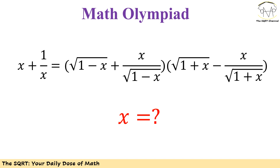On the left hand side we have x plus 1 over x, and on the right hand side we have two terms that are multiplying by each other. Each term includes two subterms. We have radical(1 minus x) and x over radical(1 minus x). So we have a symmetry here, and for the second term we have radical(1 plus x) minus x over radical(1 plus x). Altogether, we see that there is symmetry in this equation.